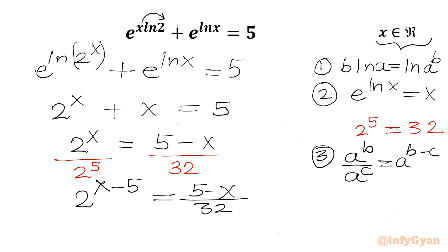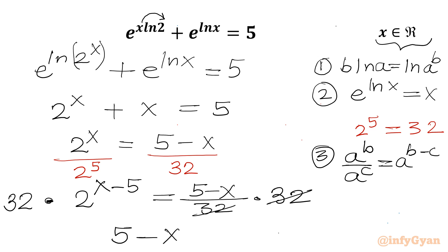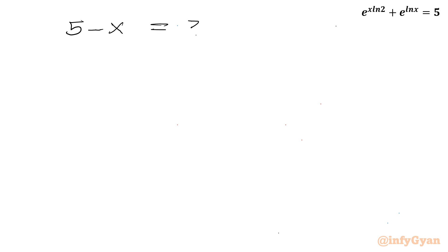Now multiply both sides by 32. The denominator cancels out, giving us 5 minus x equals 32 times 2 raised to the power x minus 5.